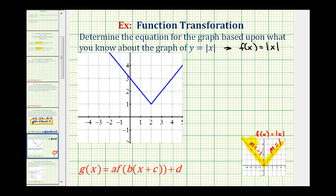Notice how the basic absolute value function has its low point at the origin. Now the low point is at the point two, one, which means this graph has been shifted right two units and up one unit.